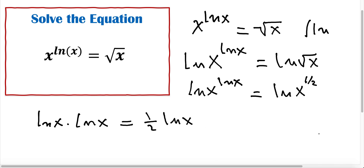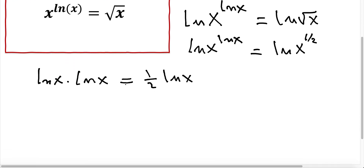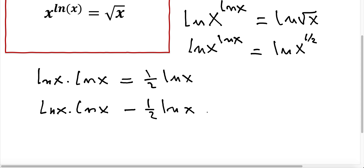In order for us to solve this equation, we make one side equal to 0. We move this term to the left, subtracting both sides by 1 and a half ln x. The equation takes the form: ln x times ln x minus 1 and a half ln x is equal to 0.